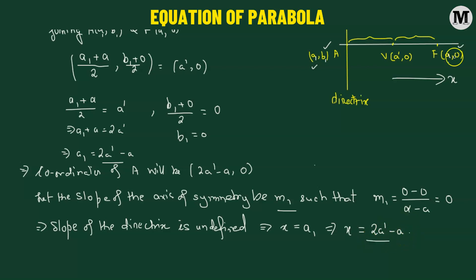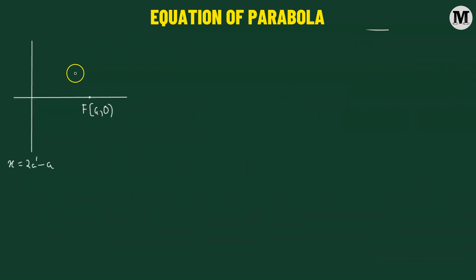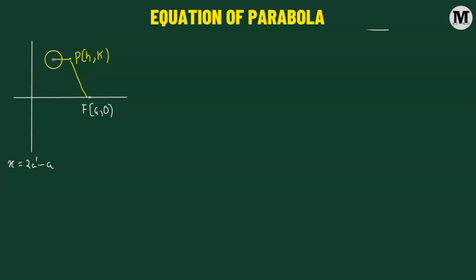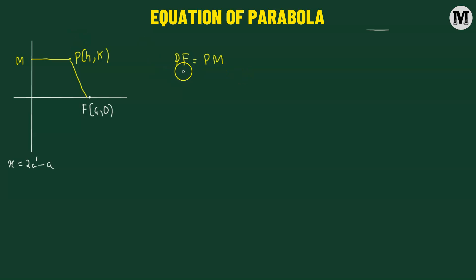Now we have the equation of the directrix and the coordinates of the focus, so we're ready to obtain the equation of the parabola. We consider a point P with coordinates h, k — P is the locus of the parabola. Point P is chosen such that if we join P and F, and drop a perpendicular from P onto the directrix meeting it at M, then by definition PF equals PM. That's what defines a parabola. We can find PF using the distance formula since the coordinates of both endpoints are given.